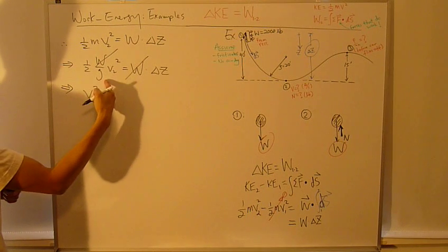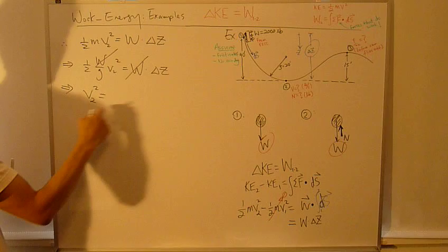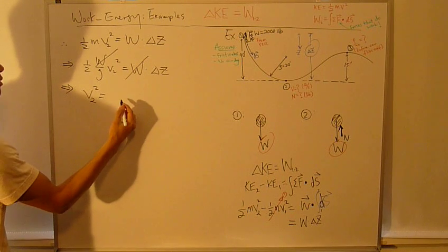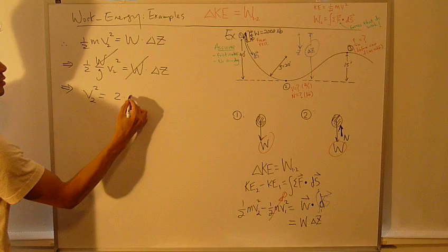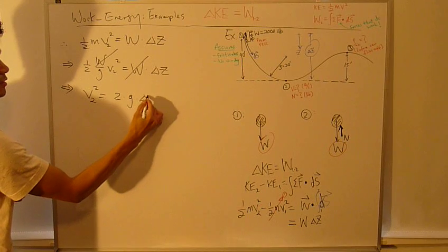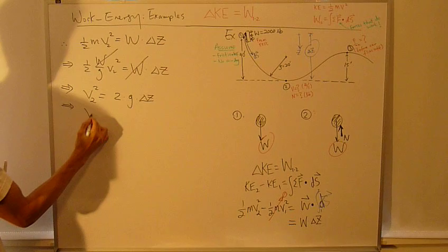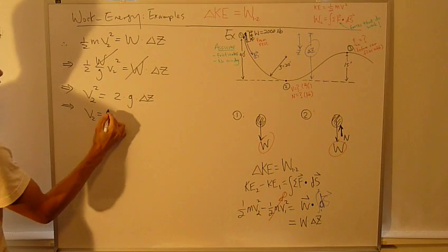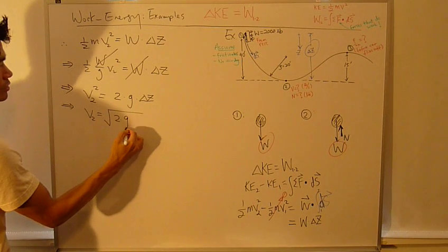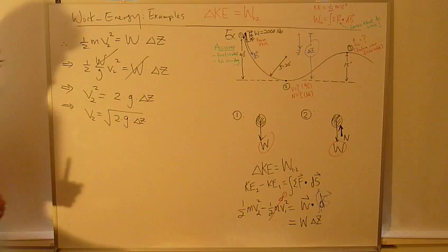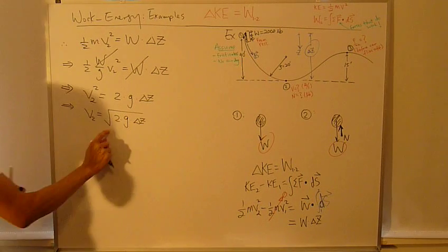So, v2 squared equals, move all the known quantities to the right-hand side, leaving the unknown on the left-hand side. We have 2g delta z. Or, v2 equals square root of 2g delta z.